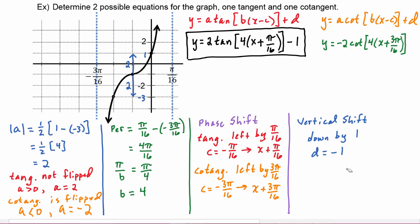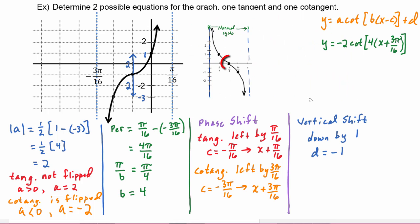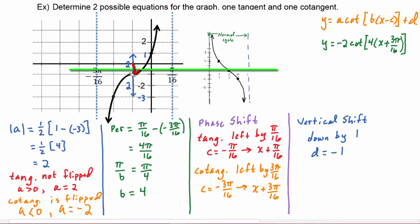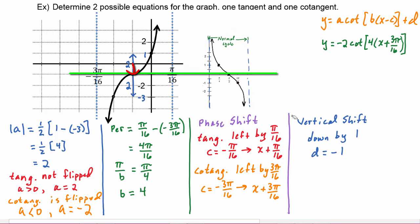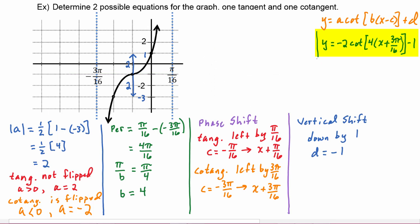For the vertical shift, looking at the unaltered graph of cotangent, the middle value (the root) should be on the x-axis, but it has moved down by one — the same as before. So d equals minus one, and here is the complete function equation if it's cotangent.